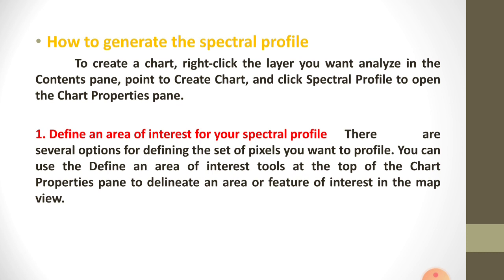The spectral profile is generated using three steps. The first step is to define an area of interest for your spectral profile. You have to select the area of interest or object — for example, you select a tree for this spectral profile. In this step, there are several options for defining the set of pixels you want to profile. You can use the 'Define an Area of Interest' tools at the chart properties pane to delineate an area of features of interest in the map view. The pixel values of the image bands that intersect the area of interest will be plotted.